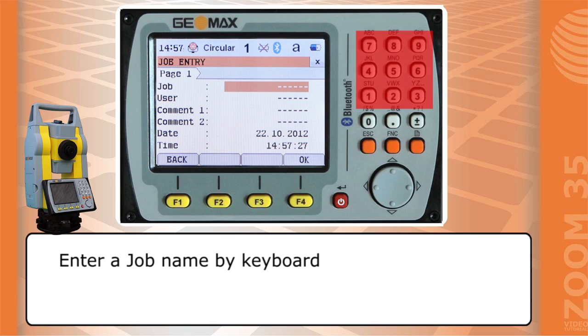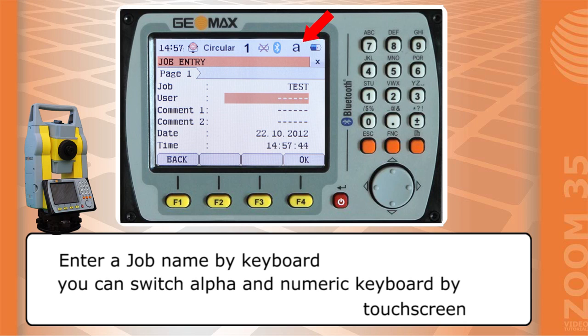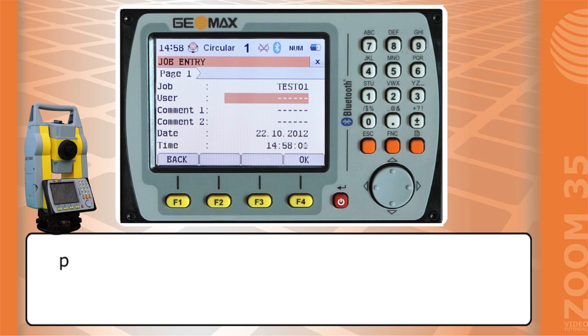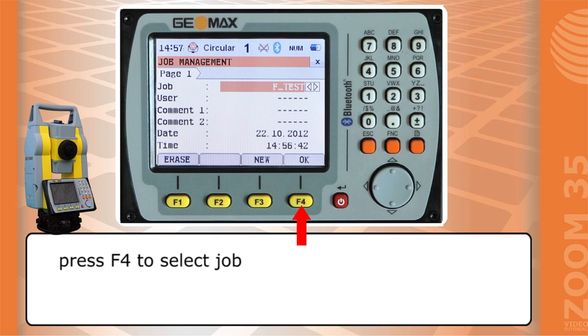Enter a job name by keyboard. You can switch alpha numeric keyboard by touch screen. Press F4 to save. Press F4 to select job.